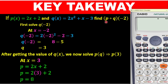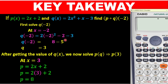Find p of k of -2. Using the manual method, we put -2 into k(x). In place of every x in k(x) we put -2. Solving this: (-2)² = 4, then 4 × 2 = 8, and -2 - 3 = -5, so 8 - 5 = 3. That means when you put -2 into k(x) you get 3.